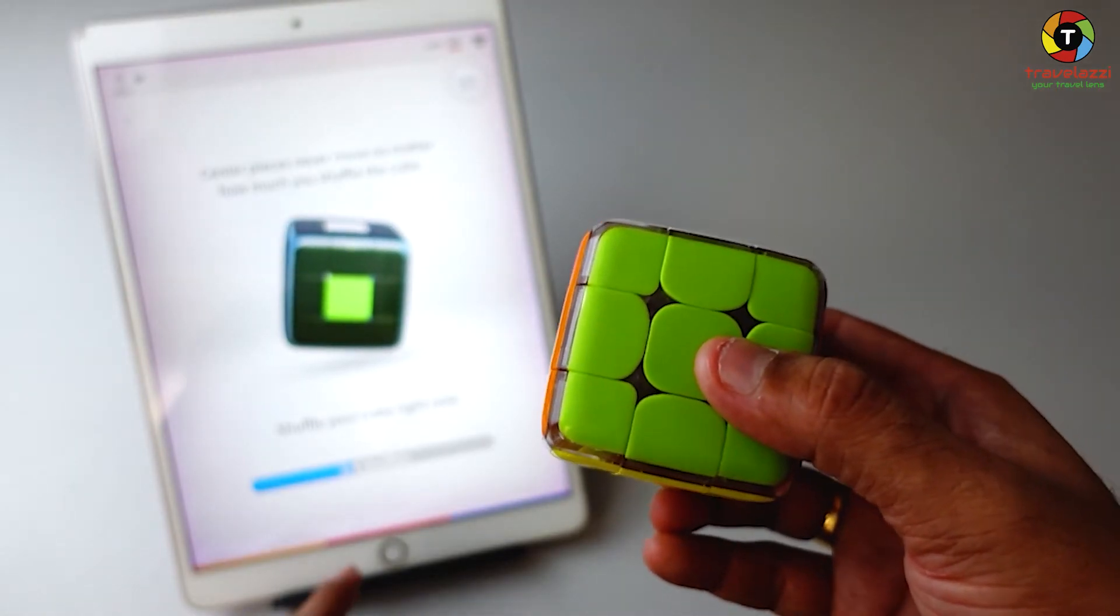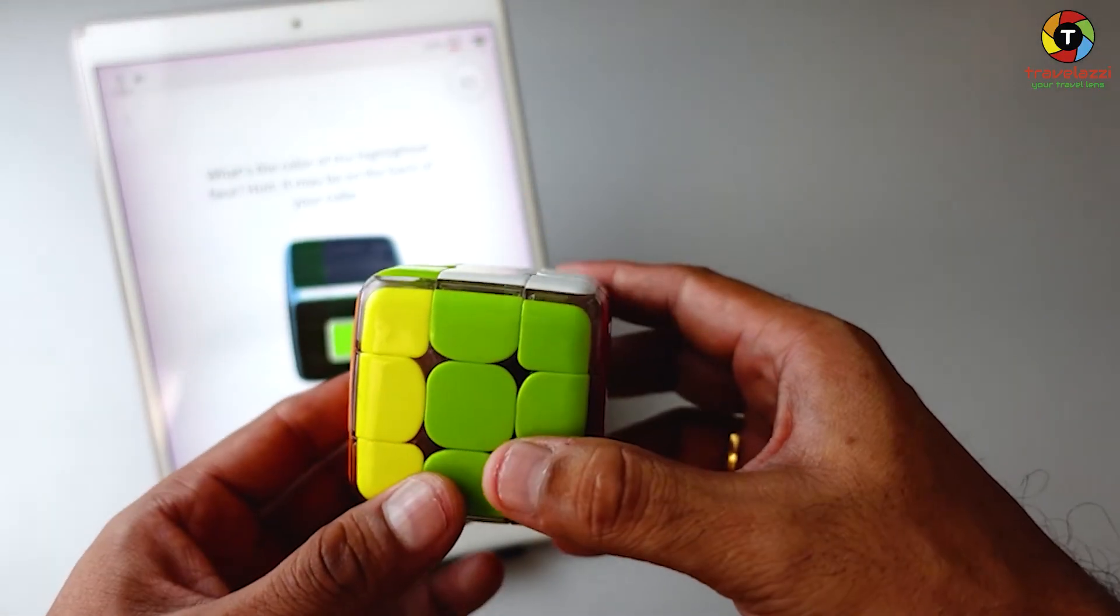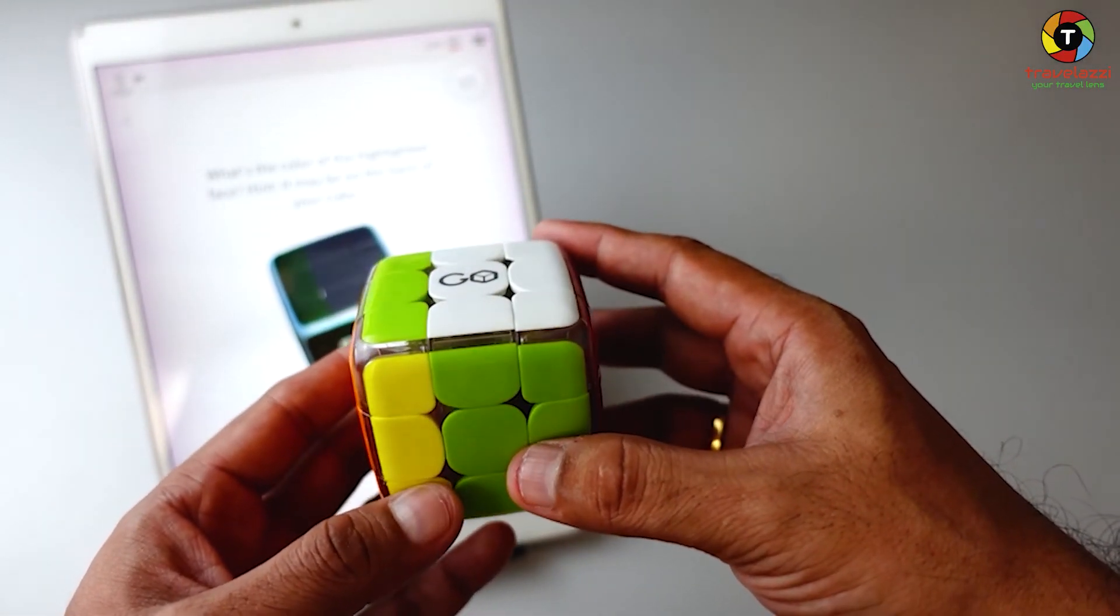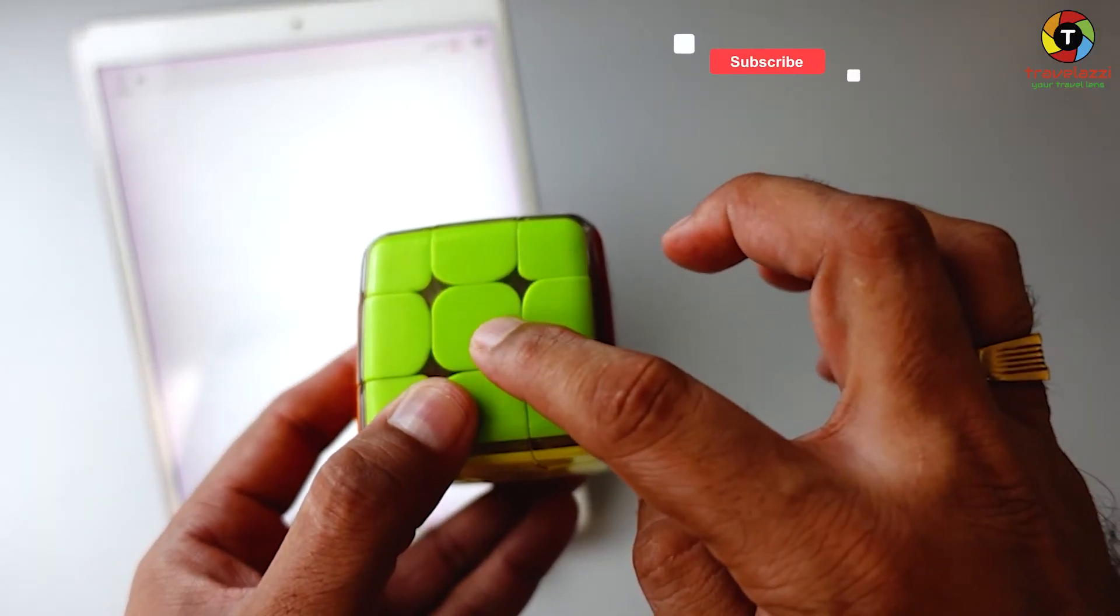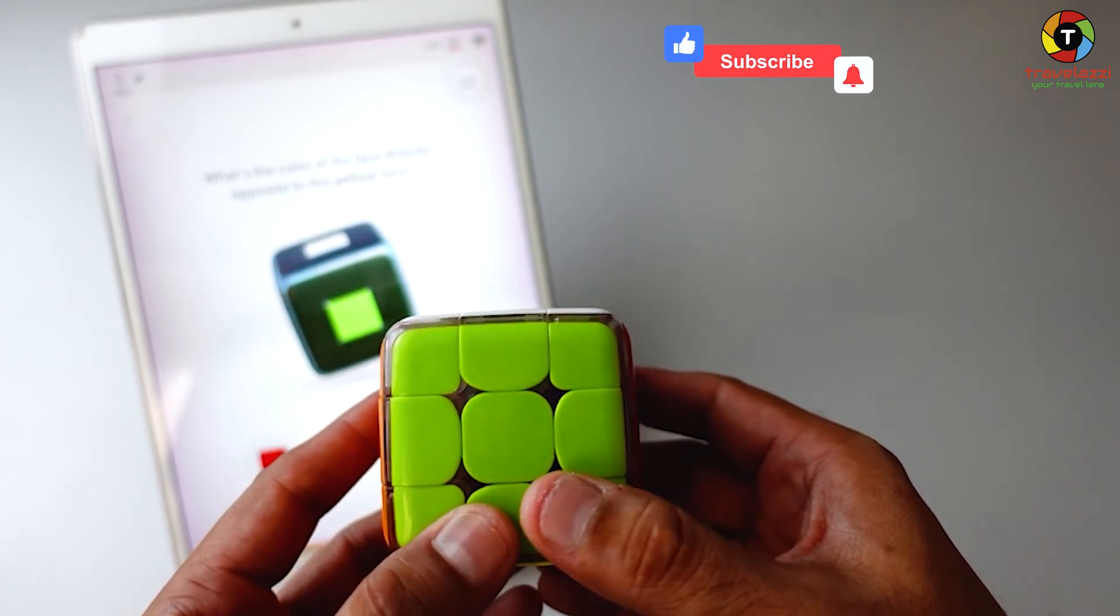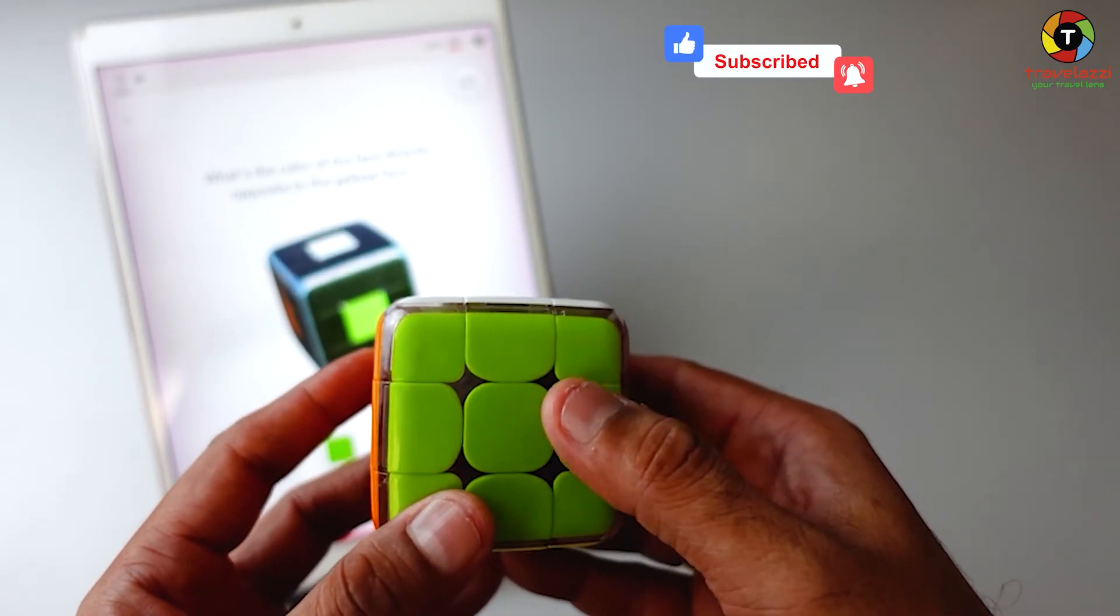What is the color of the highlighted face? Green. That's the green color facing me. What is the color of the face directly opposite to the yellow face? It's white.